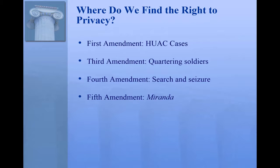The Fifth Amendment suggests a right of privacy in terms of your right to be informed of rights that you have before interacting with the state — for example, a right to remain silent. Also, the Ninth Amendment specifically says that the list of rights in the Bill of Rights should not be construed to mean there are no other ones. The Supreme Court has in fact found rights not listed in the Constitution to be part of the meaning of due process in the 14th Amendment.